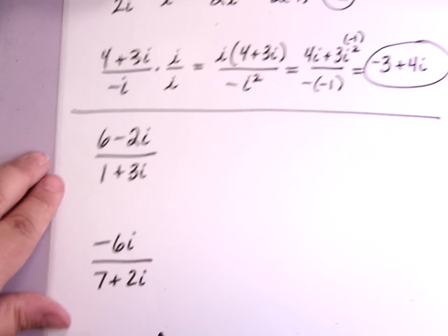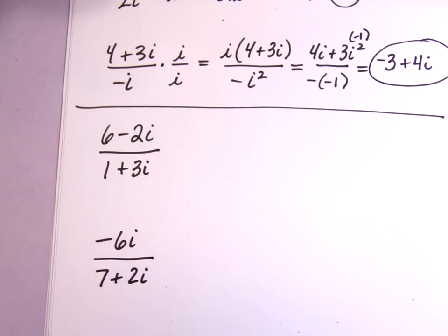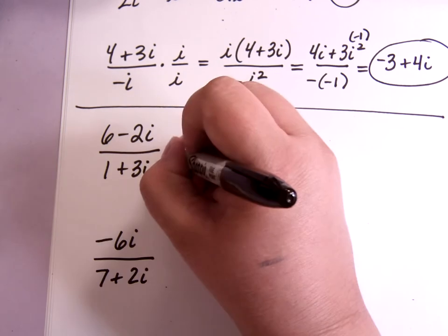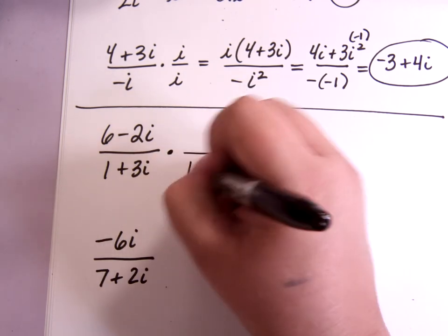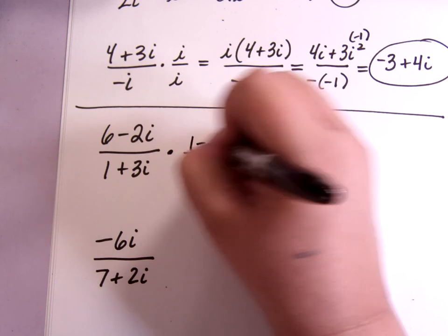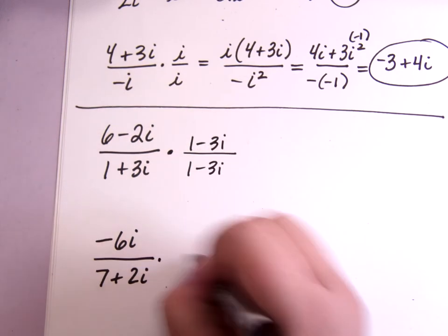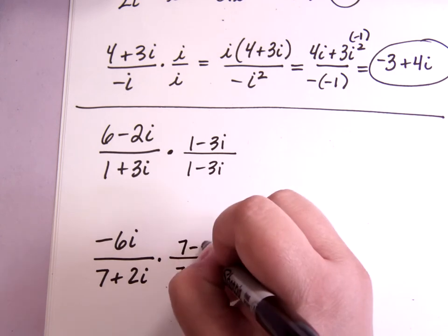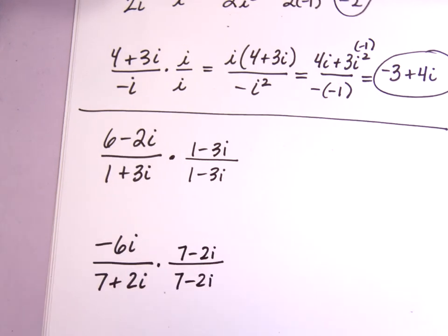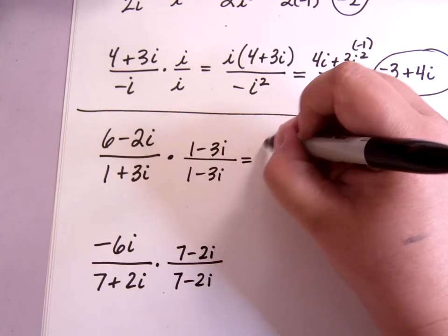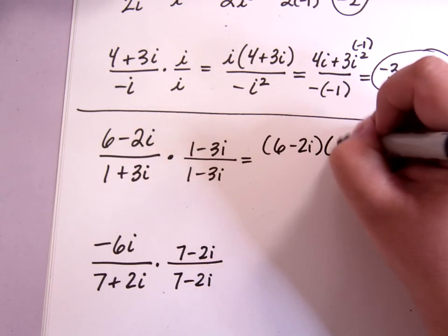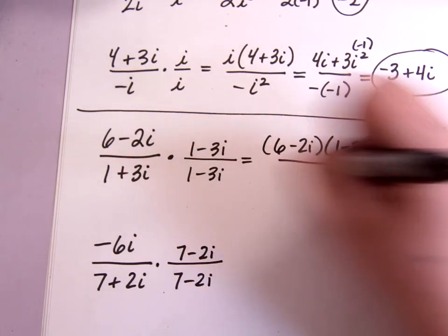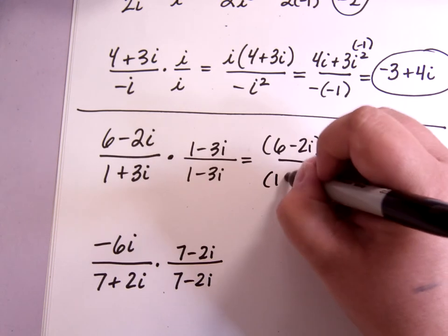Now, if you do have a plus or a minus in your denominator, you actually have to multiply by the complex conjugate, which in this case is 1 minus 3i, and in this case is 7 minus 2i. It's not always minus, it's the opposite sign from whatever you have. So here, you will do basically foil on top and on bottom.